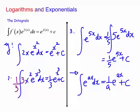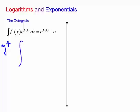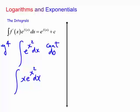Some cases we can't do: the integral of e to the x squared dx cannot be integrated, because the derivative of x squared is 2x — it differs from the front by a variable, not a constant. However, if I modify it to x times e to the x squared dx, I can now do it, because the derivative of x squared is 2x, and adjusting by a constant gives a half e to the x squared plus c.